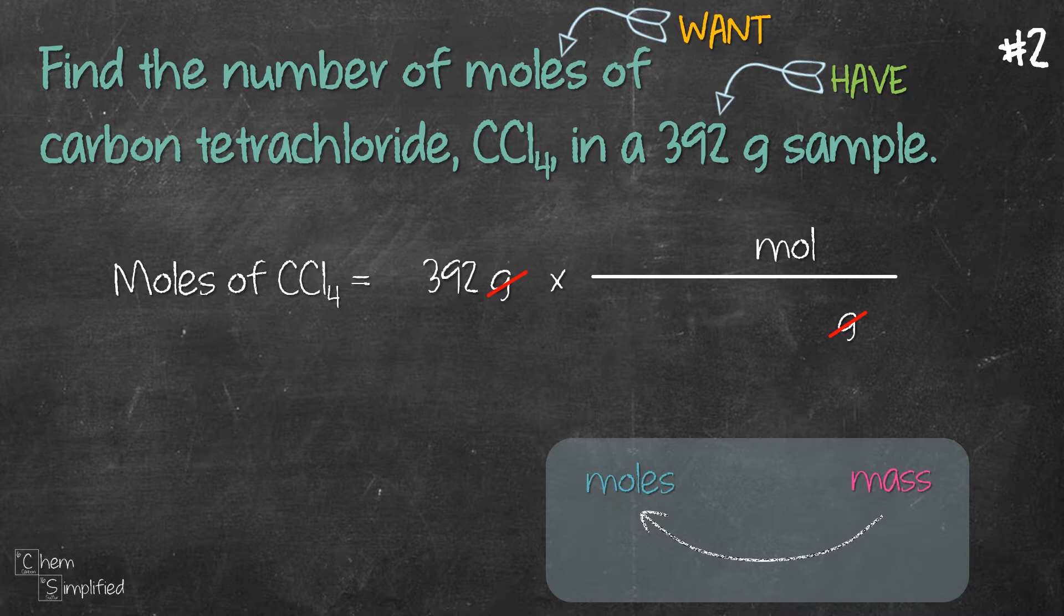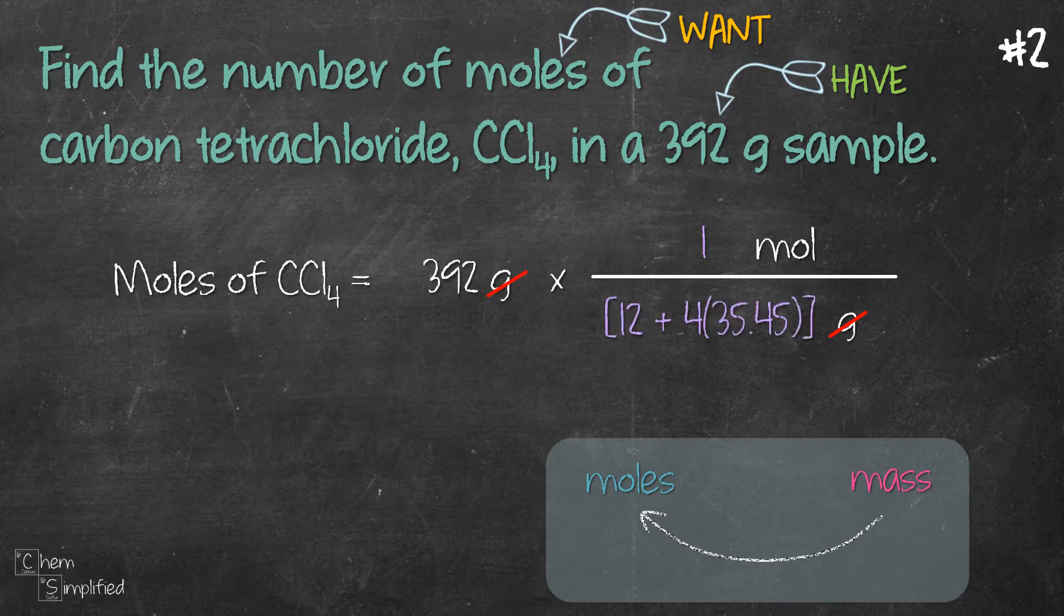Now it's time to fill in the numbers. Since we're using molar mass, which means it's the mass for one mole, so we'll place one next to mole, and then we need to calculate the molar mass of CCl4, and that's 12 plus 4 times 35.45—12 for carbon, 35.45 for chlorine—which turns out to be 153.8 grams.